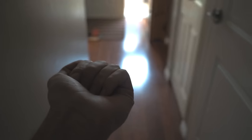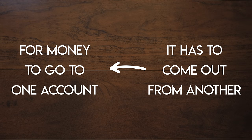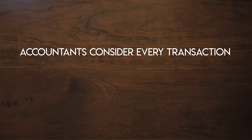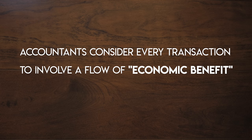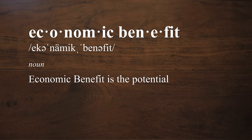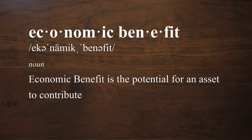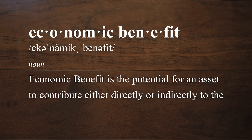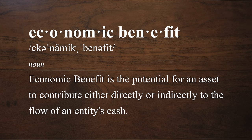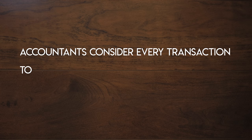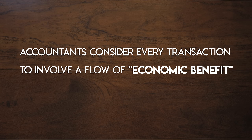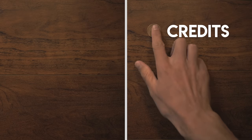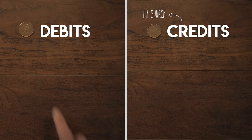In the world of finance, money doesn't magically appear or disappear. For money to go to one account it has to come out from another. Accountants consider every transaction to involve a flow of economic benefit from a source to a destination. Economic benefit is the potential for an asset to contribute either directly or indirectly to the flow of an entity's cash. Credits represent the source and debits represent the destination.